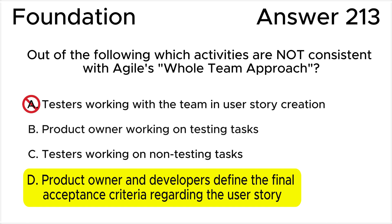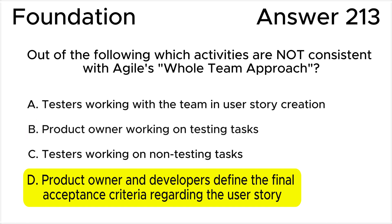Answer A is incorrect because this statement is consistent with Agile's whole team approach — testers work in collaboration with the product owner and developers for user story creation. Answer B is incorrect because this statement is consistent with Agile's whole team approach. Answer C is also incorrect; testers work on non-testing tasks based on their skill sets.